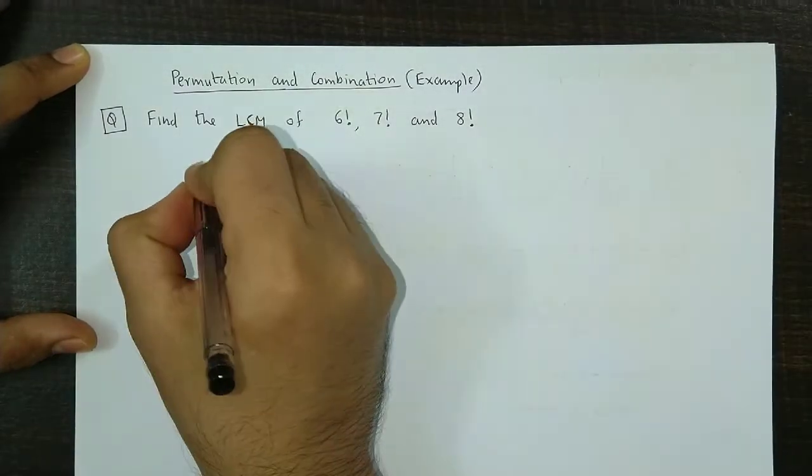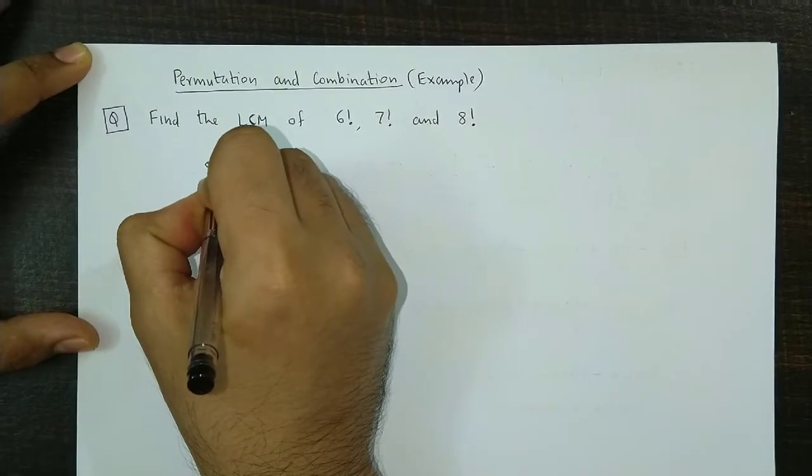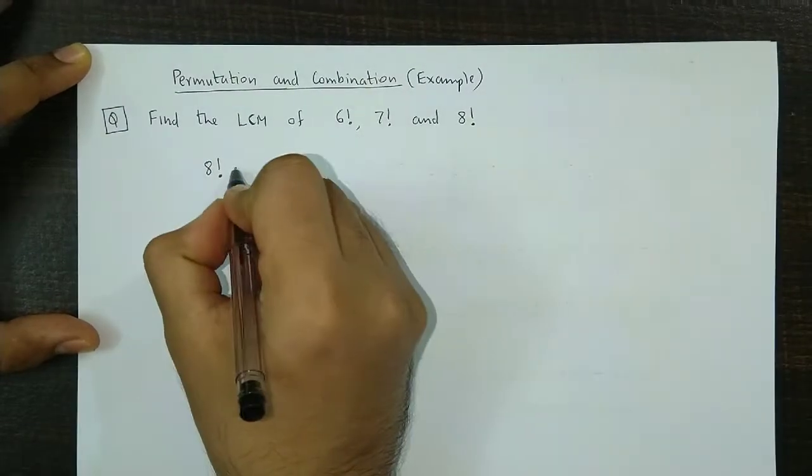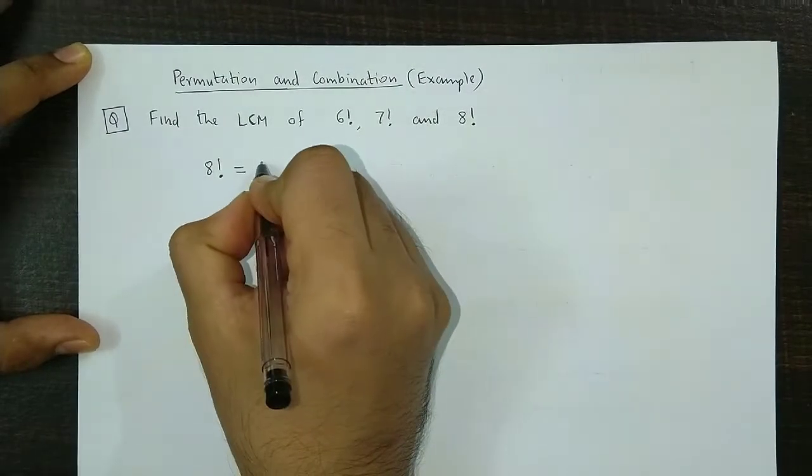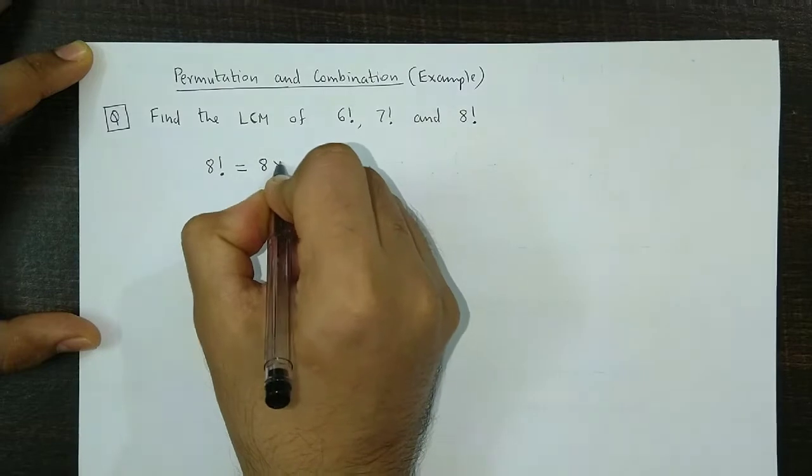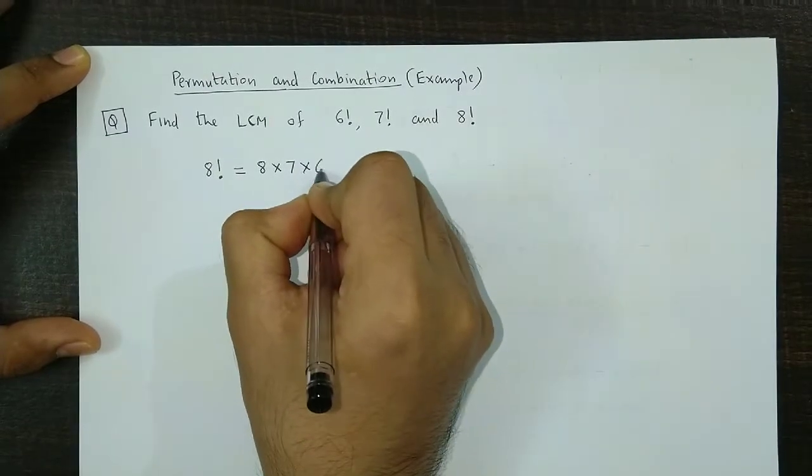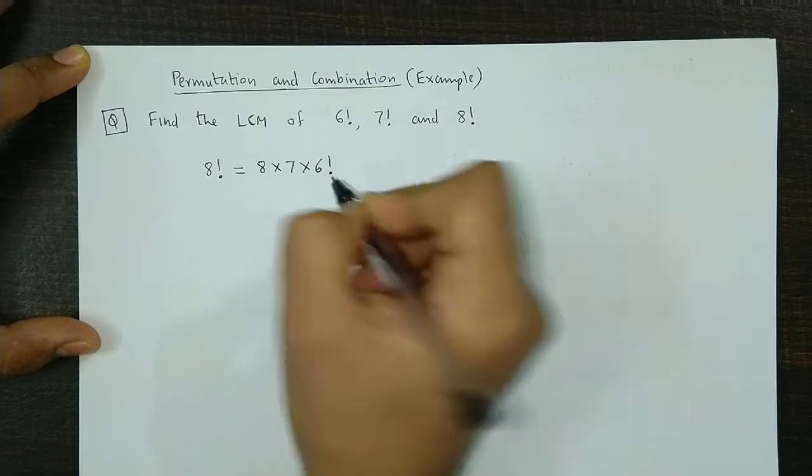Now let's begin with 8 factorial. 8 factorial could be expressed as 8 into 7 into 6 factorial.